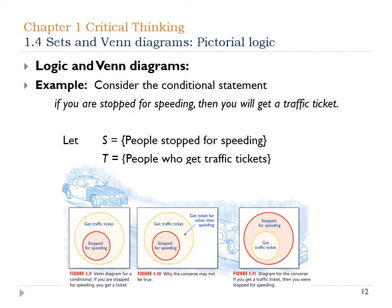We're making the assumption that everybody stopped for speeding gets a traffic ticket — that's why there's no piece outside the traffic ticket circle. So if you get stopped for speeding, you're getting a traffic ticket. In Figure 1-10, it gives us a little more information — anybody outside of the stopped-for-speeding circle is getting a ticket, but for something other than speeding: could have been running a red light, reckless driving, or a bunch of different issues.